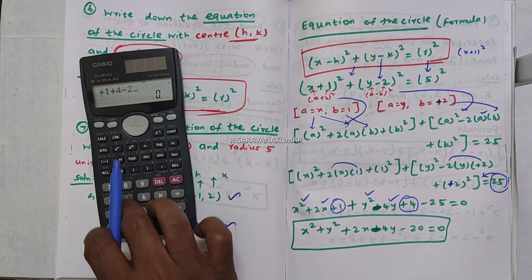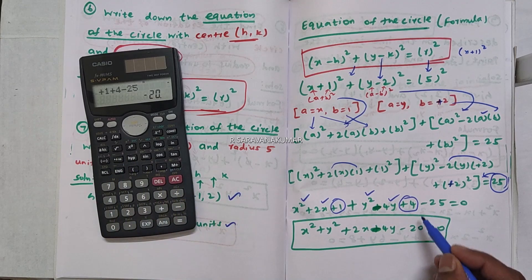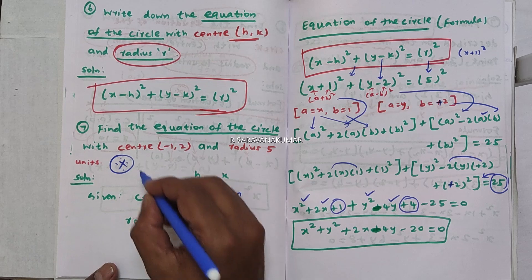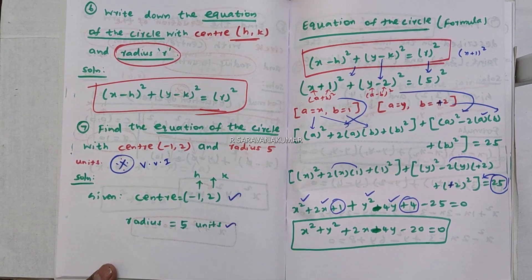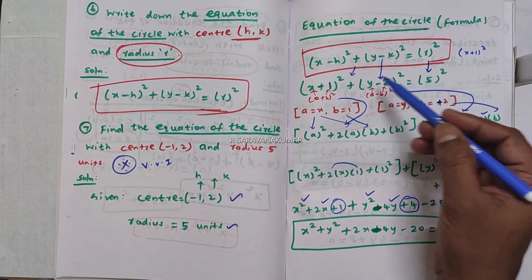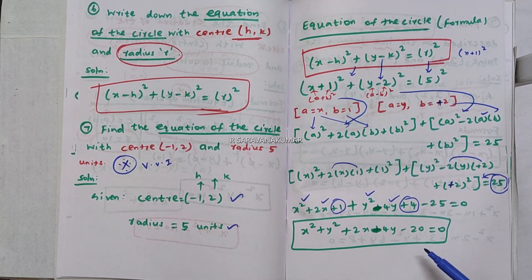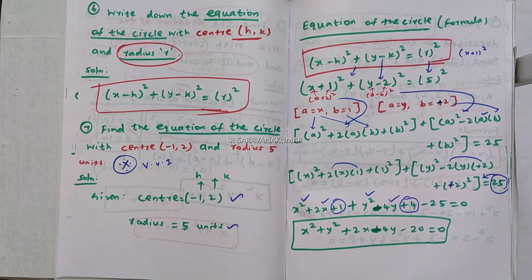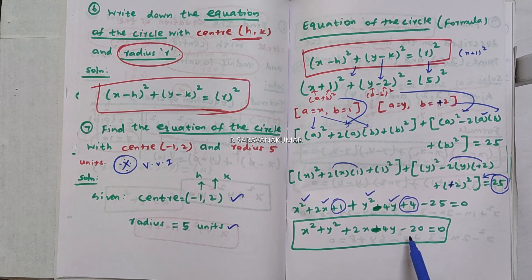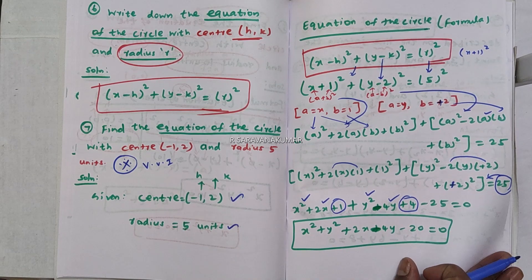Plus 1 plus 4 minus 25 equal to zero. Using the a plus b whole square and a minus b whole square circle formulas, the answer is: x squared plus y squared plus 2x minus 4y minus 20 equal to zero.